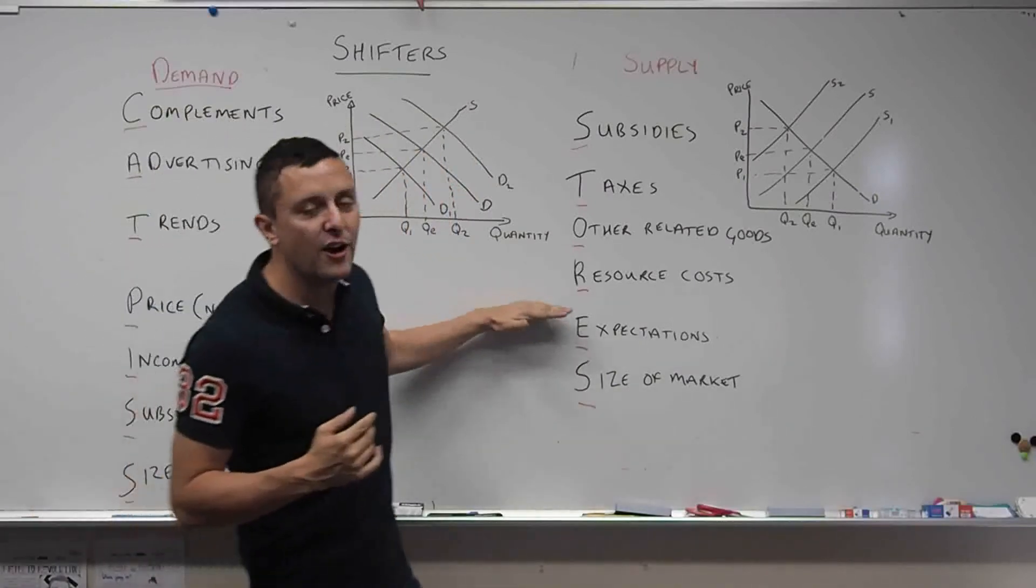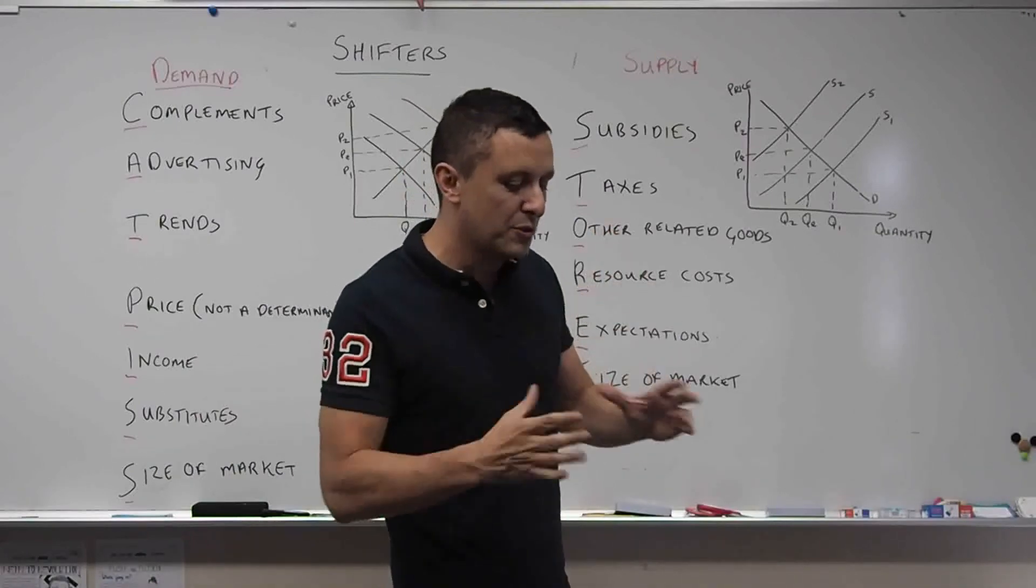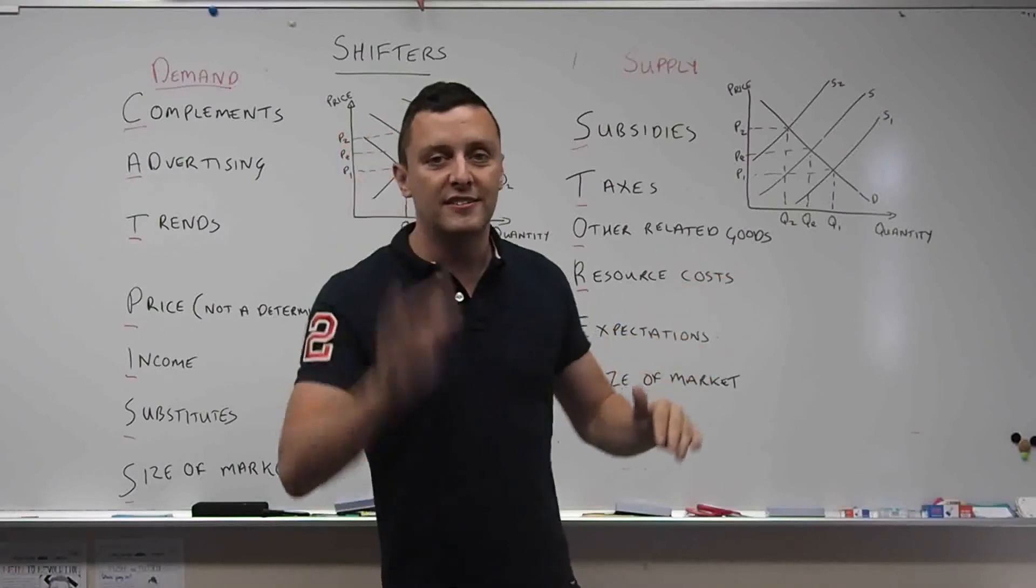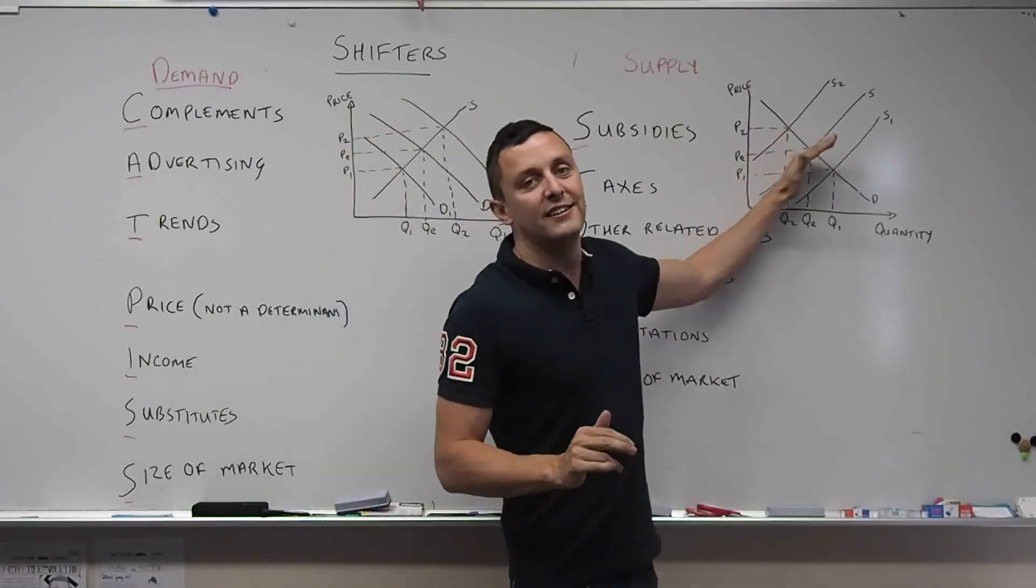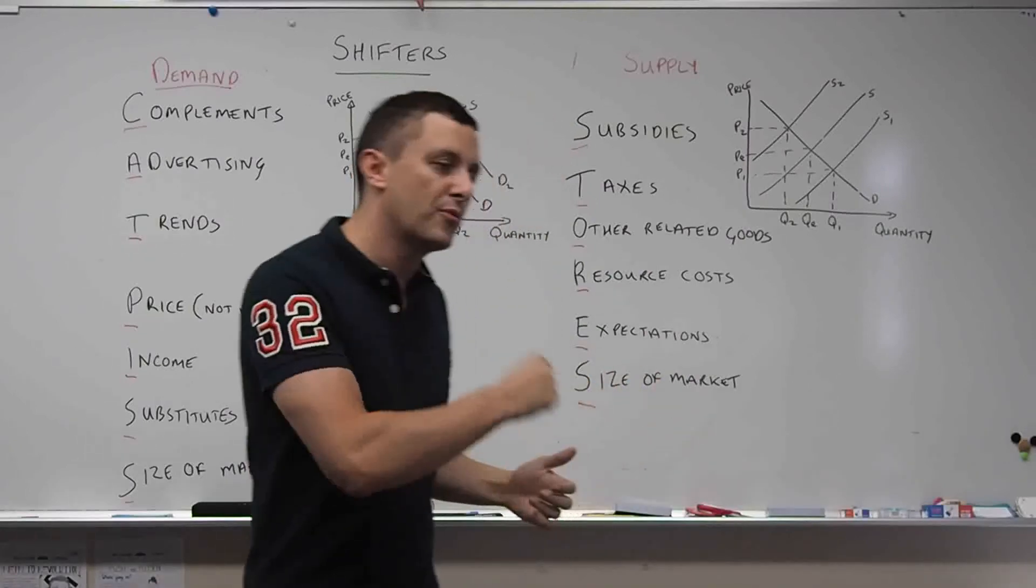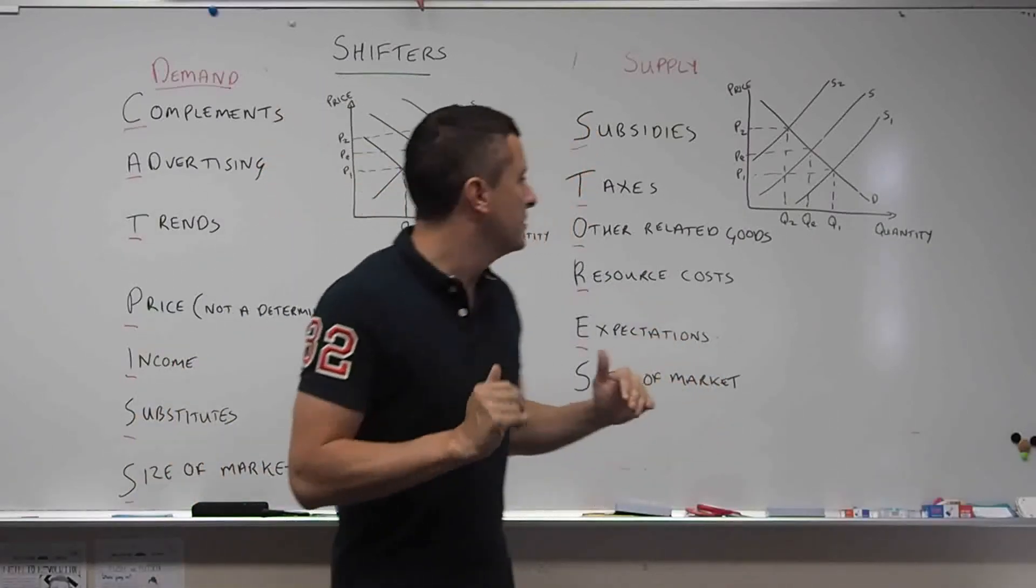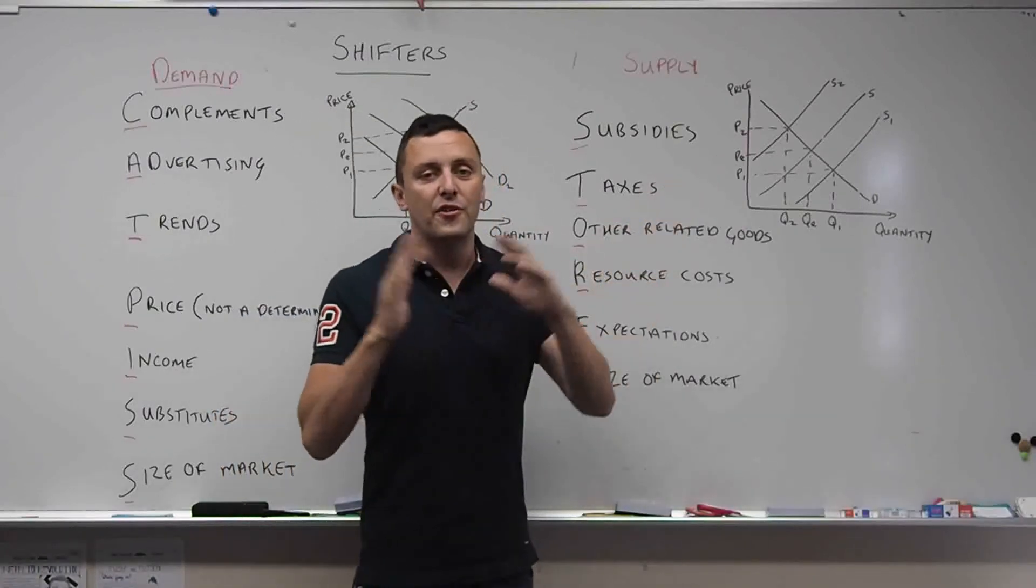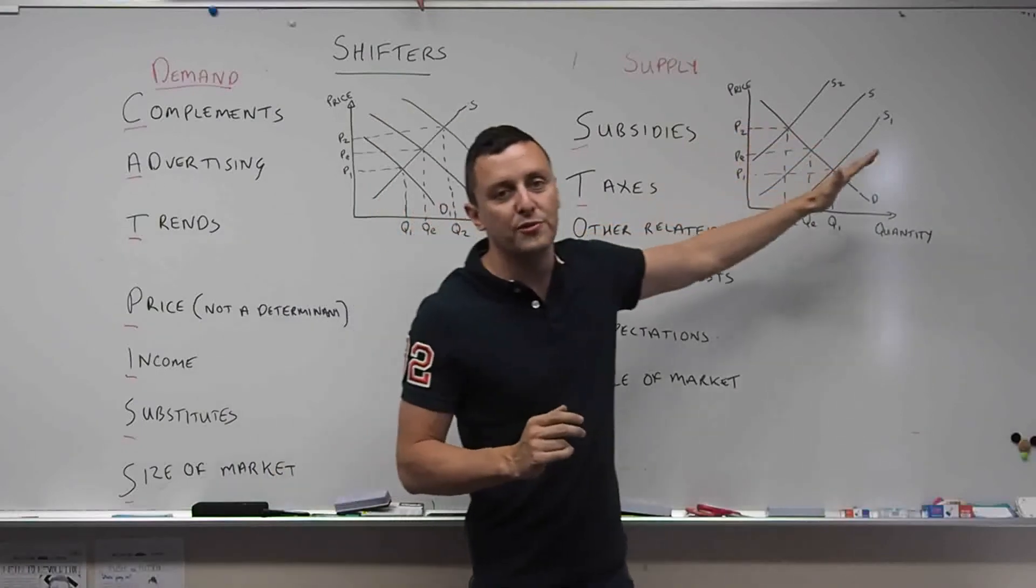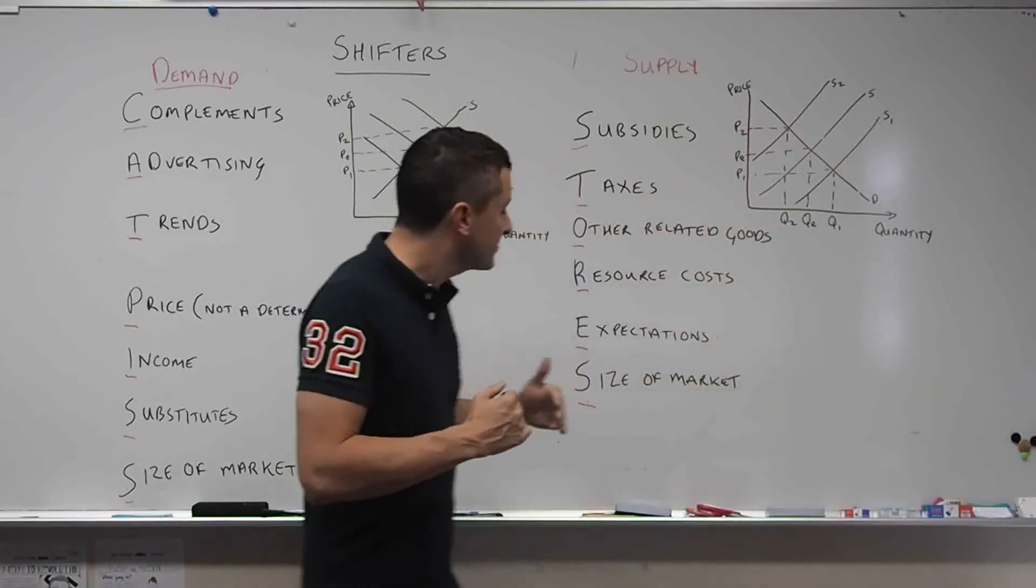Next one, R for resource costs. So if the resource that's used or intermediate goods that's used to produce that goods decreases in price, then they should start increasing the supply of that product. For example, right now, Chinese steel is very, very low in price. That means that cars around the world should be cheaper to produce, which will increase the world supply of cars with cheap steel.